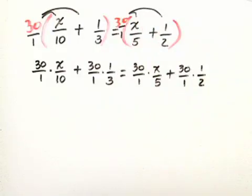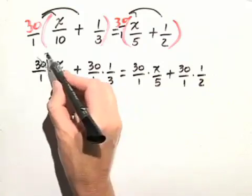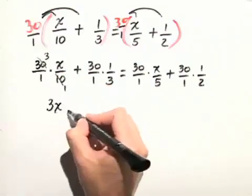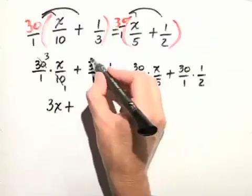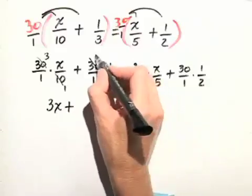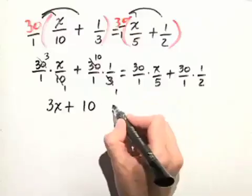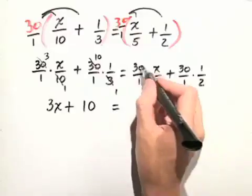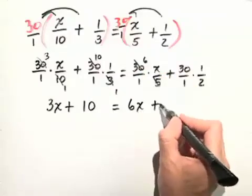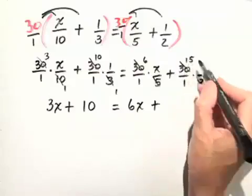Now let's simplify. The 30 and the 10 are both divisible by 10. So that simplifies to 3 and 1. So we have 3x plus, 30 and 3 this time are both divisible by 3. So we have 10 and 1. And we're left with 10. Equals, 30 divided by 5 is 6. So we have 6x plus, finally, 30 divided by 2 is 15.